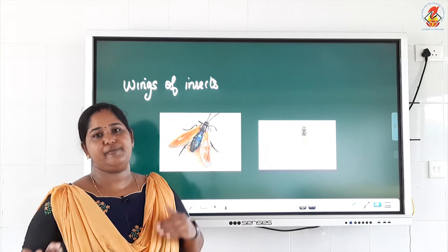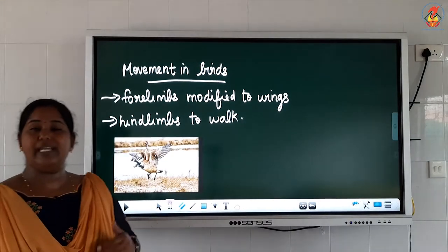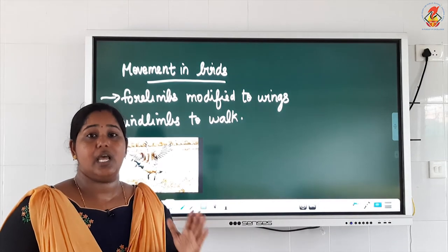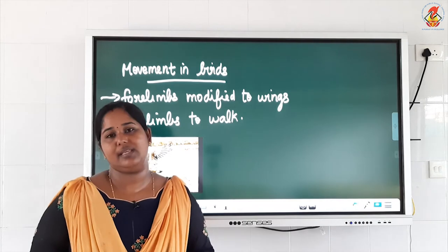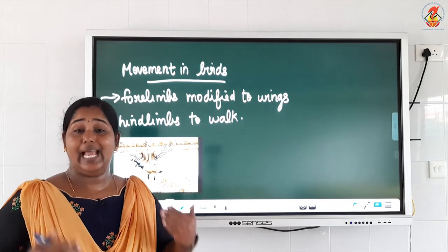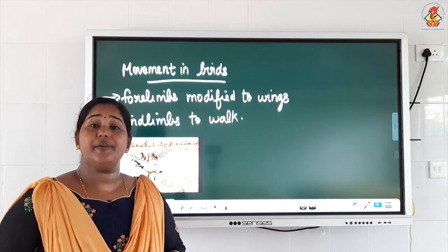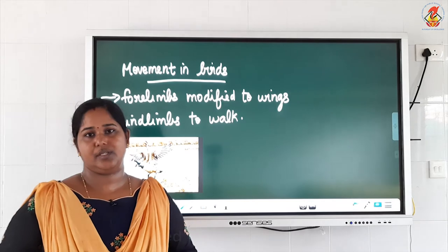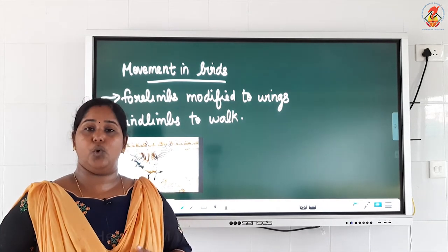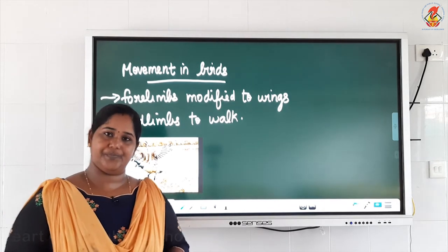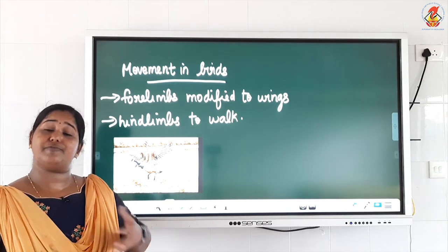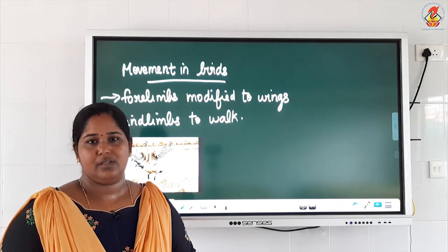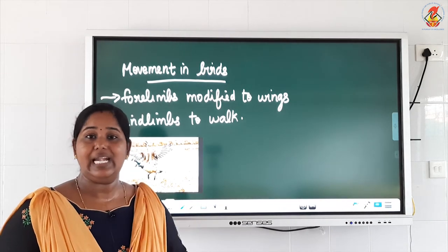Some insects like lice and bed bugs do not have wings — it is not necessary that all insects have wings. Some of them crawl, some of them fly. Next is movement in birds. Birds have their forelimbs — front legs — modified into wings. Wings are soft and beautiful and help the bird to fly. The wings of a bird have strong muscles attached to the breastbone of the bird. These strong muscles attached to the breastbone help the bird to flap its wings and fly. Some birds can travel from one country to another using their wings.